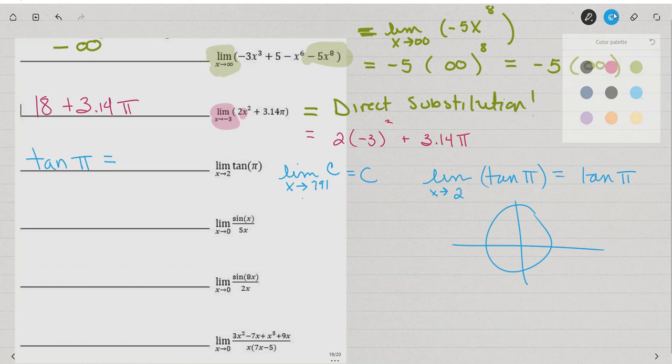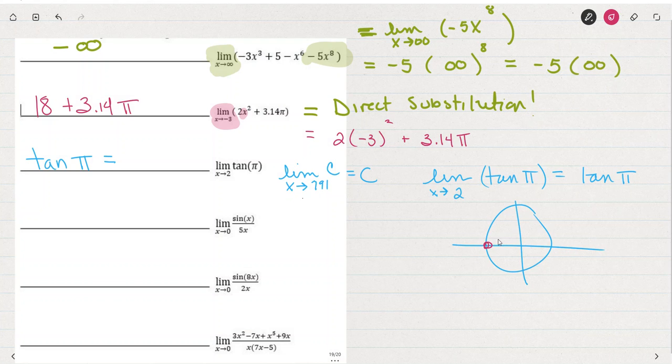If I think of my unit circle and I find π, the cosine of π is -1, sine is 0. So the tangent, sine of π over the cosine of π, is 0 over -1, or just 0. So the tangent of π is 0, which gives us that the limit as x approaches 2 of the tangent of π is 0.